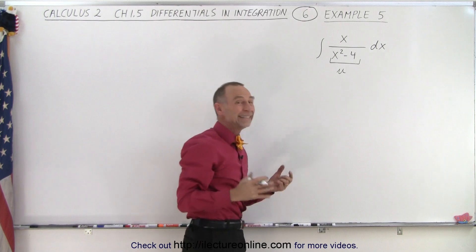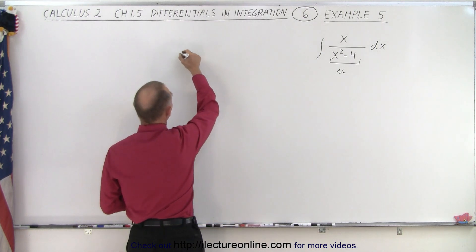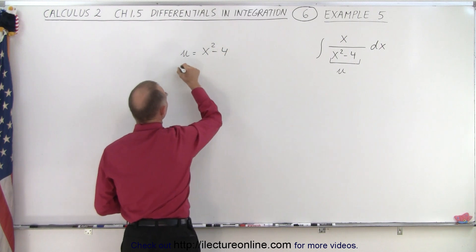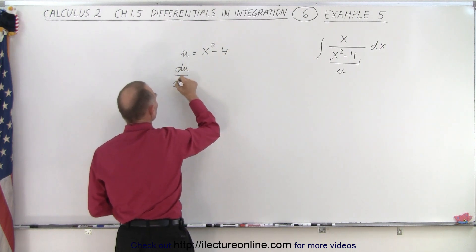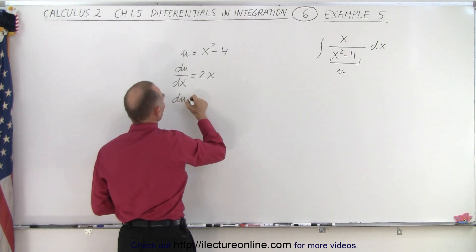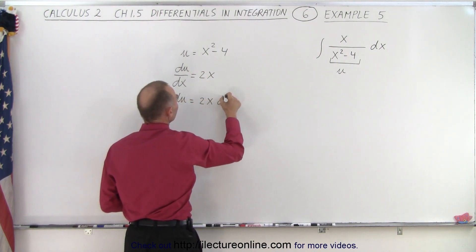And of course, then I need a proper du. So if we're going to let u equal x squared minus 4, then du dx, the derivative of u with respect to x, would be equal to 2x, and my du is going to be equal to 2x dx.